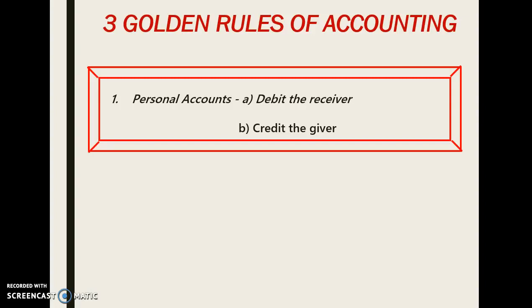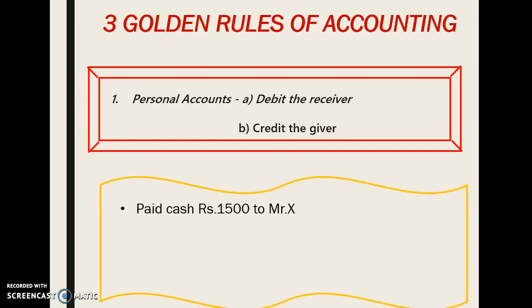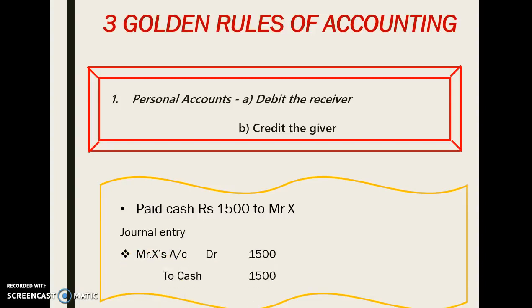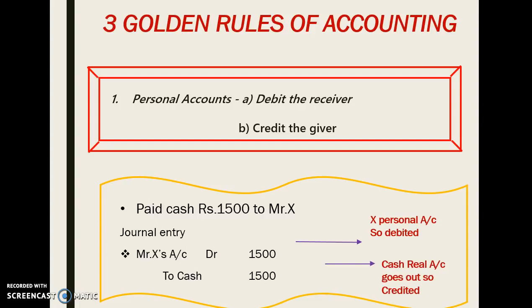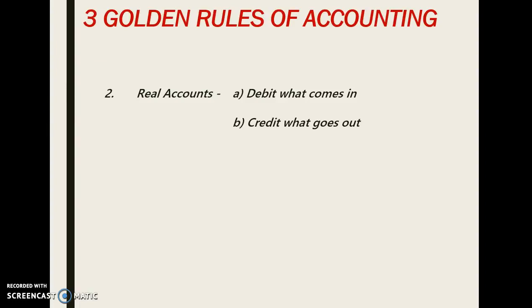Let's see one example: paid cash rupees 1500 to Mr. X. Journal entry — Mr. X account debit, to cash. Mr. X's personal account is debited because he is the receiver, and cash is credited because cash is a real account and cash goes out from our business. So as per the first golden rule — personal account: debit the receiver and credit the giver.